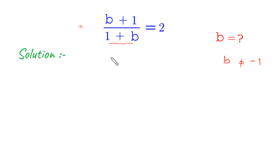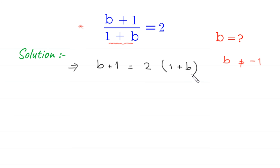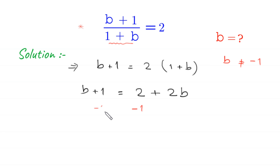If we multiply both sides of this equation by 1 plus b, this implies that b plus 1 is equal to 2 times 1 plus b. Next, b plus 1 is equal to 2 times 1, which is 2, plus 2 times b, giving 2b. We subtract 1 from both sides, leaving b equal to 1 plus 2b.